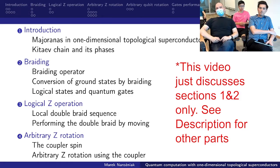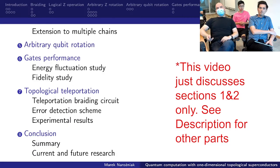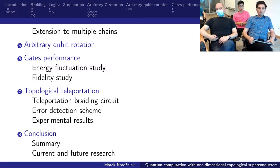We worked on the logical Z operation, logical Z operation with arbitrary angles, arbitrary qubit rotation. We will compare those gates. And then on more practical side, we will talk about some quantum algorithms that could be applied using braiding, notably topological teleportation. Then we will conclude and talk about some other ideas. So let's get started.